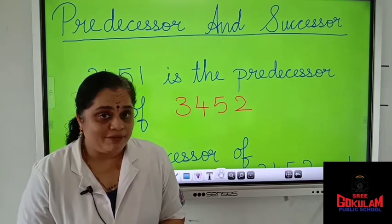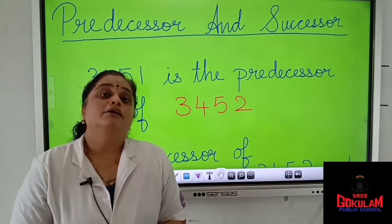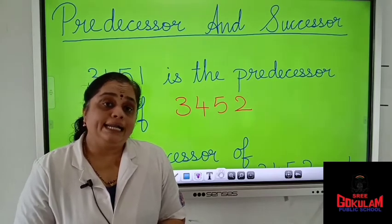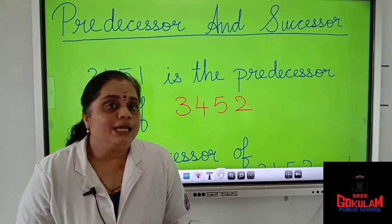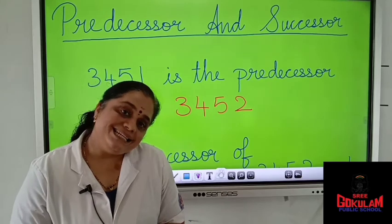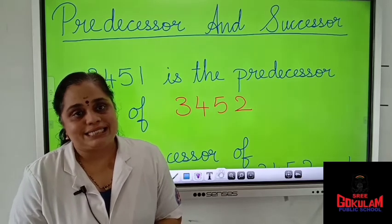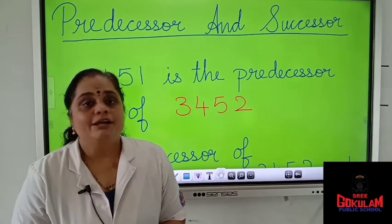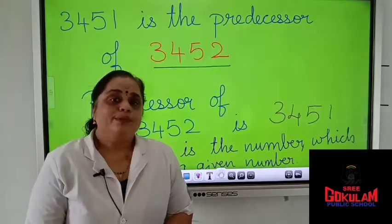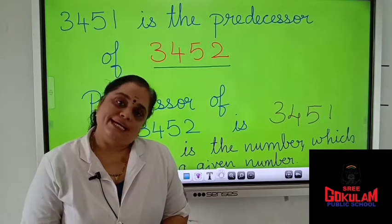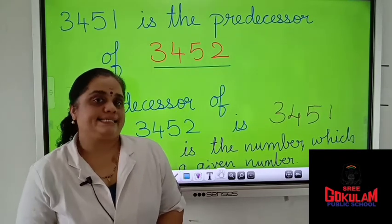Same way, before the number 400, which number will come? 399. So, predecessor is the number which comes before. Let us see the predecessor and successor with an example.